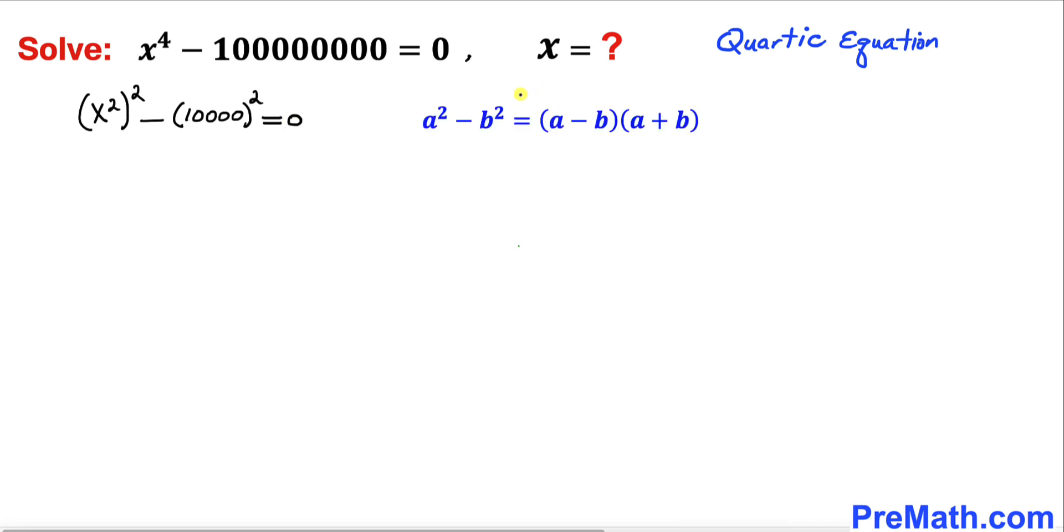Now let's recall this famous identity: a^2 - b^2 could be written as the product of (a - b) times (a + b). We are going to apply this to our equation.